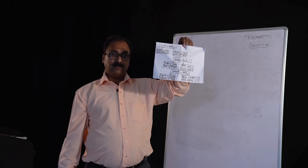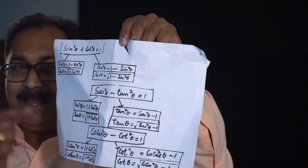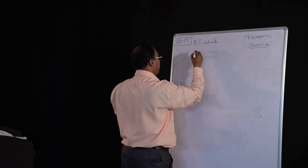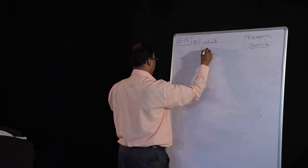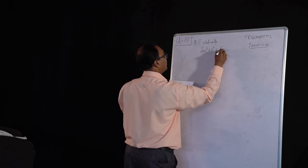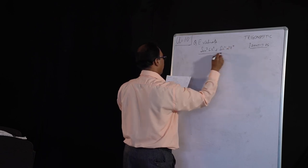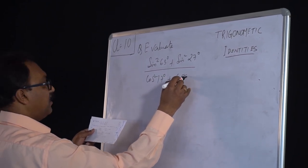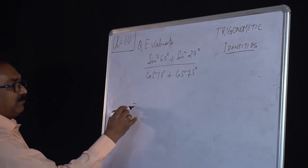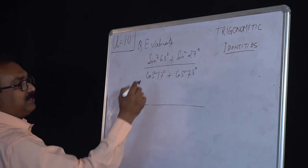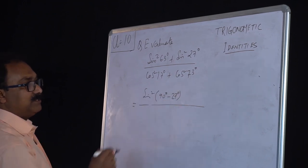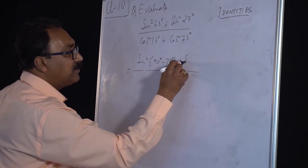Now relating this formula, we have to solve some questions. The first question we are going to evaluate: sine square 63 degrees plus sine square 27 degrees, divided by cos square 17 degrees plus cos square 73 degrees. Look here — what you learned last time: sine 63 you can change it. Keep sine square as it is, and change 63 with respect to 90 — how much is that? It is 27.